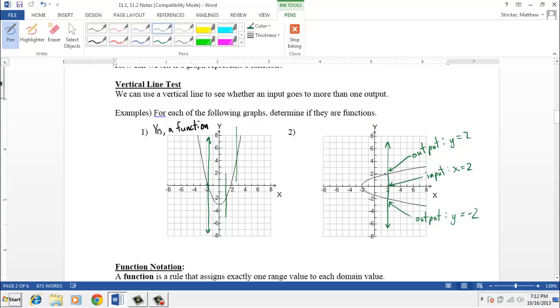So when I'm talking about outputs, of course, I'm talking about y values. So that point right there corresponds to y equals 2, and this point right here corresponds to y equals negative 2.